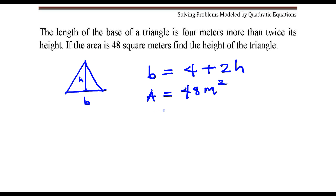The formula for the area of a triangle is 1 half base times height. Now there's a couple of things I'm going to do. I'm going to replace this A with 48 and I'm going to replace this B with 4 plus 2 times H.